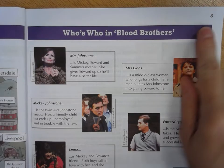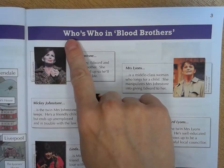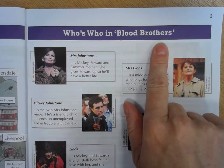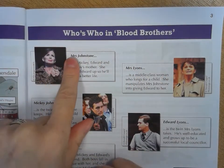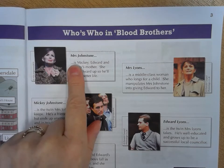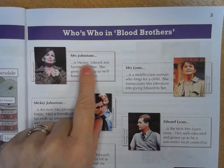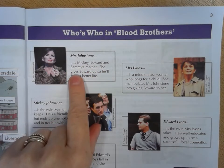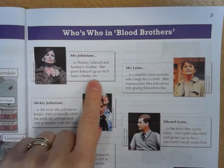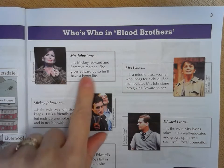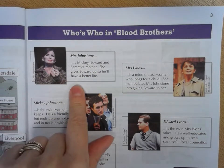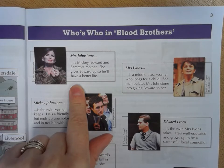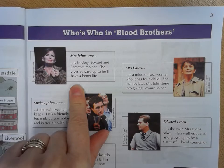On page three we're looking at who's who in Blood Brothers. First we've got Mrs. Johnstone — she is Mickey, Edward, and Sammy's mother and she gives Edward up so he'll have a better life. If you remember, Mrs. Johnstone married somebody who loved to take her dancing and made her feel really special, and then she ended up getting pregnant.